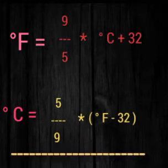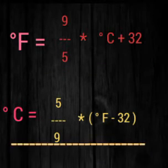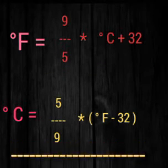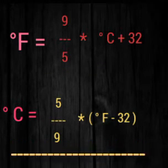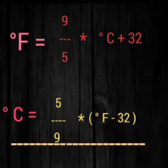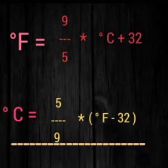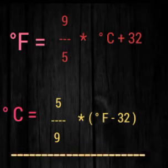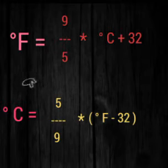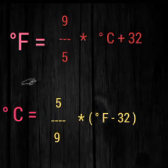Similarly, we also get: degree Celsius is equal to 5/9 into (degree Fahrenheit minus 32). So these formulas can be used to convert temperatures.